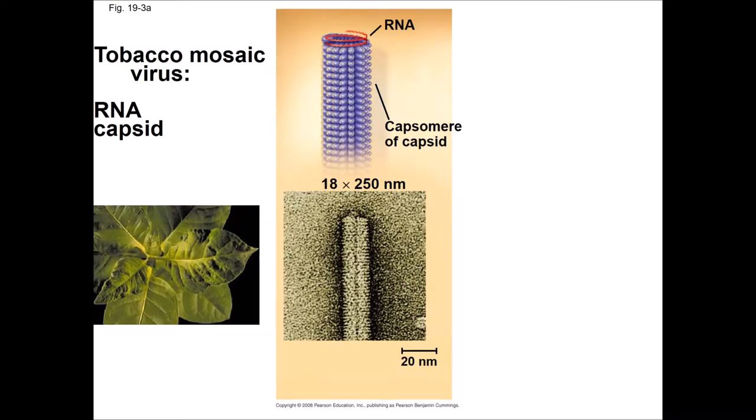We now know that the tobacco mosaic virus is a simple virus made only of nucleic acid — RNA — and proteins. Most viruses at a minimum have nucleic acids surrounded by a protective coat of proteins called a capsid. The proteins in the capsid are called capsomers. In the tobacco mosaic virus, this coat is very simple, made only of many copies of the same protein.